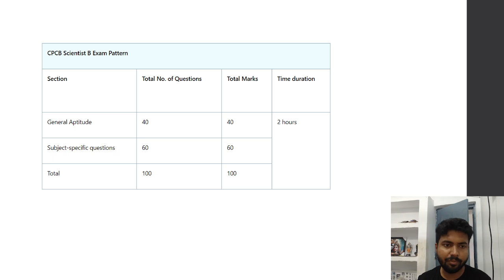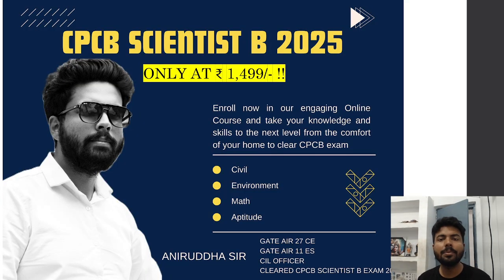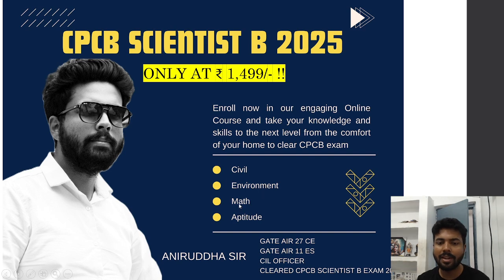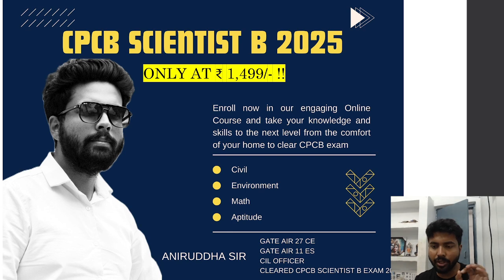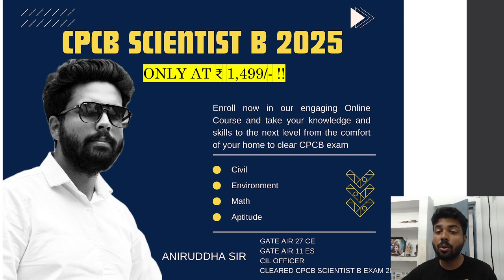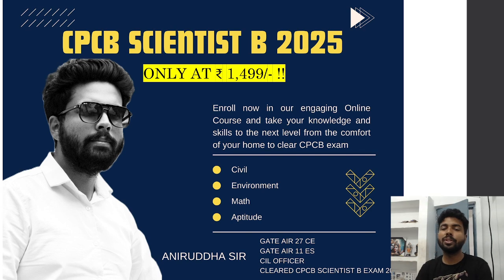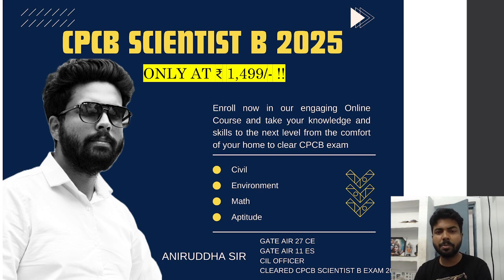This is the CPCB Scientist B 2025 examination course, available for only ₹1,499. Math and aptitude are incorporated for Civil, Environmental, and Chemical Engineering disciplines. The course links are given in the description and in the pinned comment. You can also follow me on Instagram and DM me if you want to know more about the course or have any queries.